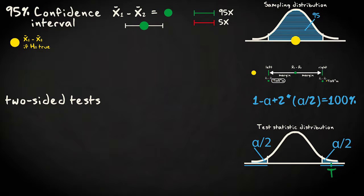With a test, the interval is centered around the expected test statistic value under the null. With a confidence interval, it's centered around the sample statistic value.